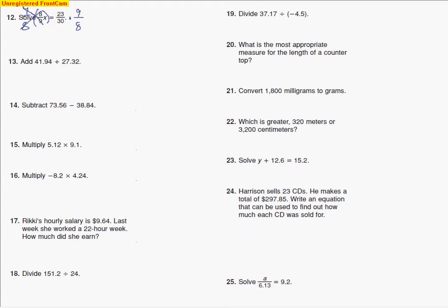I look for some cross-canceling. What I see is that the 30 and the 9 have a common factor of 3, so you can divide them each by 3. So the 9, when I divide that by 3, I get 3. When I divide the 30 by 3, I end up with 10.